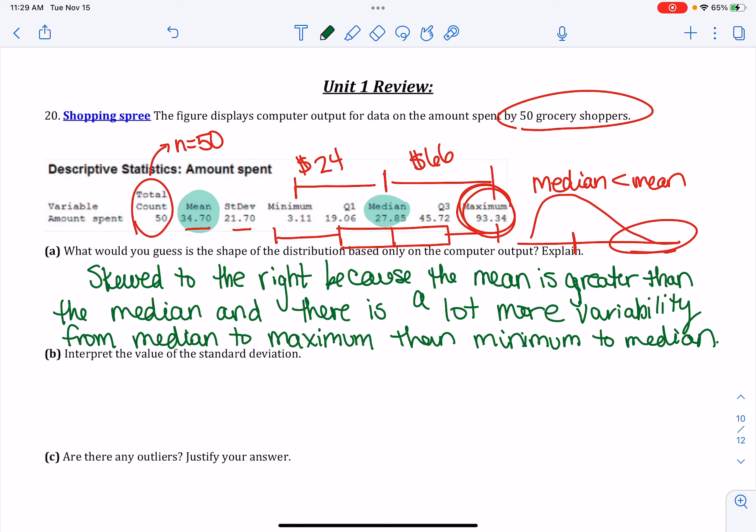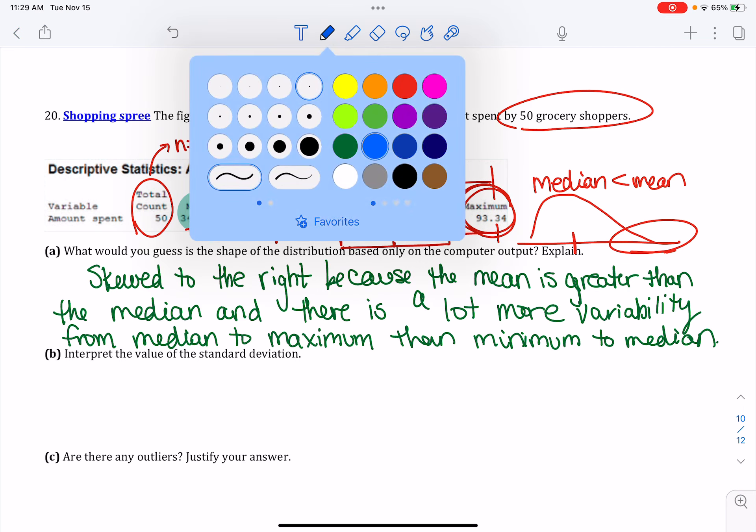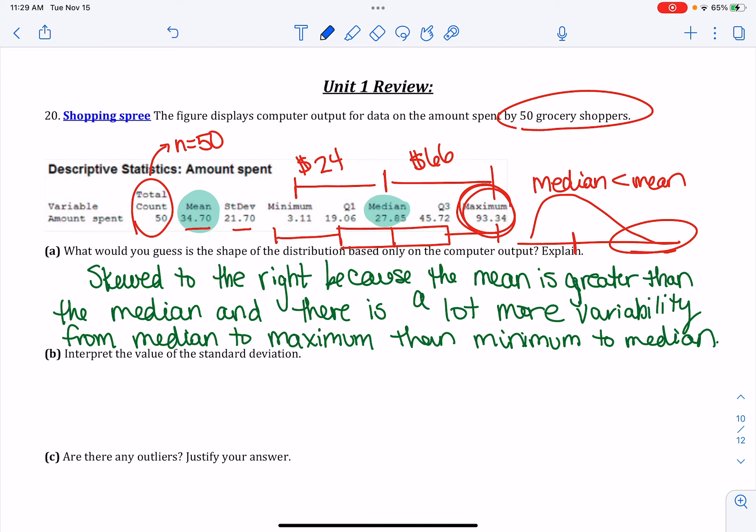Interpret the value of the standard deviation. So you need two values to do this. You need the standard deviation, and again, we're talking about money here. So I'm going to label that, and then the mean is going to be $34.70. So on average, people are spending $34.70.